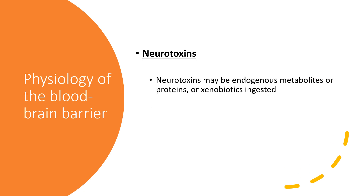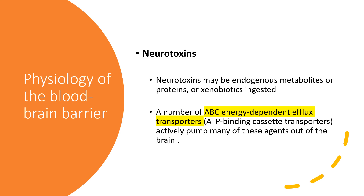Many neurotoxins can be endogenous metabolites or exogenous proteins and xenobiotics ingested with food. There are a number of efflux transporters — such as ABC energy-dependent efflux transporters — which expel neurotoxins outside the endothelial cells. The ATP-binding cassette transporter can actively pump many of these agents out of the brain.